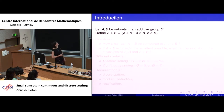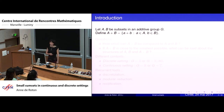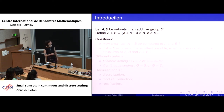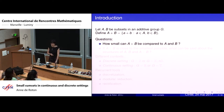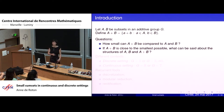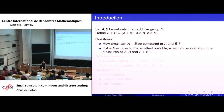I will begin with explaining what a sumset is. I take two sets A and B in a group G, and I define A plus B — my group is a commutative group. I will be interested in two questions: first, how small can A plus B be compared to the size of A and the size of B? And if A plus B is close to its smallest possible value, what can be said about the structure of A, the structure of B, and the structure of A plus B?